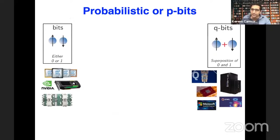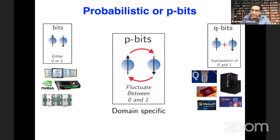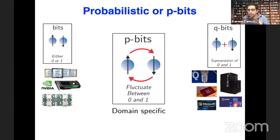Today I'll tell you about P-bits, which are really in this spectrum — in between bits and qubits. They're not coherent or quantum mechanical, so they're classical in some sense, but they're not deterministic either. They fluctuate — instead of being zero or one deterministically, they fluctuate between zero and one randomly. This is a really good building block for a lot of stochastic or probabilistic applications.